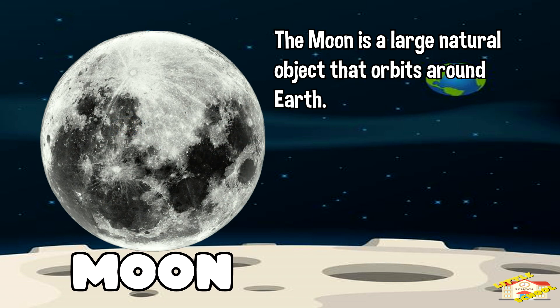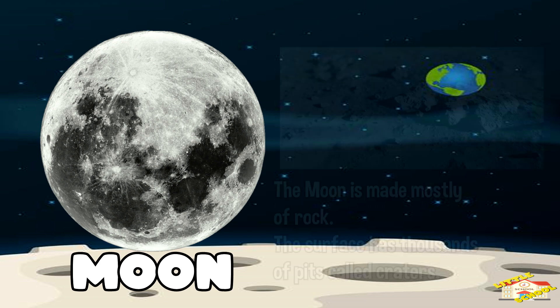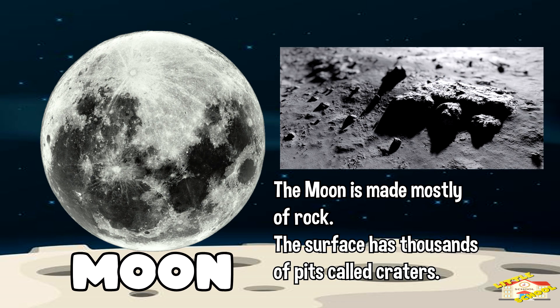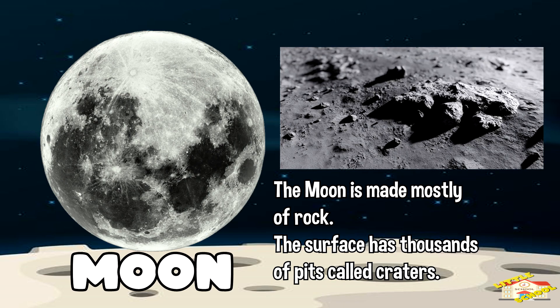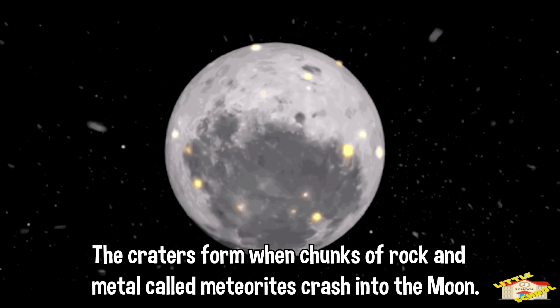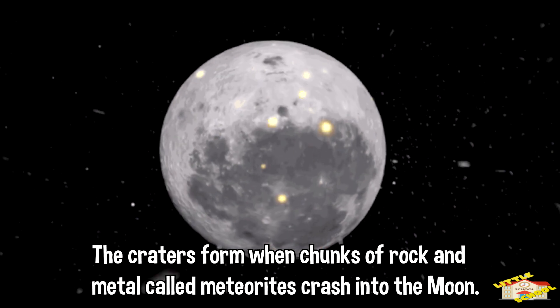The moon is a large natural object that orbits around Earth. As the brightest object in the sky, it is second to the Sun. The moon is made mostly of rock. The surface has thousands of pits called craters. The craters form when chunks of rock and metal called meteorites crash into the moon.